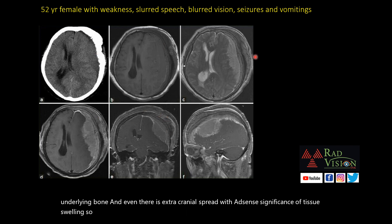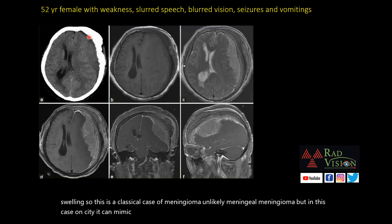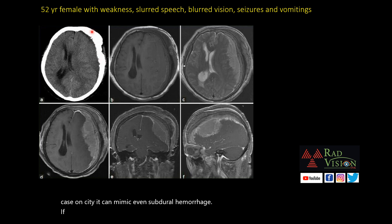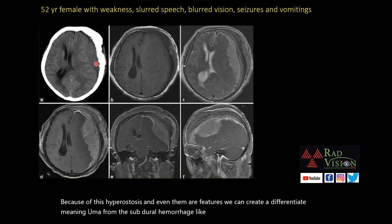This is a classical case of meningioma, likely meningothelial type. On CT, it can mimic a subdural hemorrhage, but because of the hyperostosis and MR features, we can clearly differentiate meningioma from a subdural hemorrhage-like appearance.